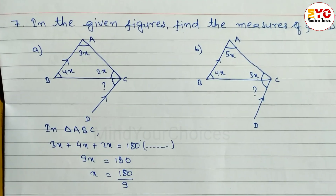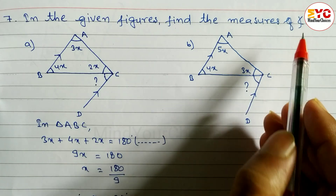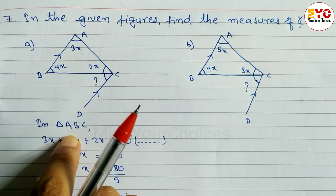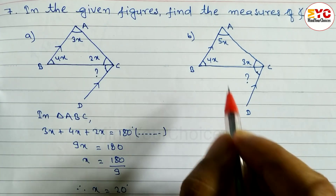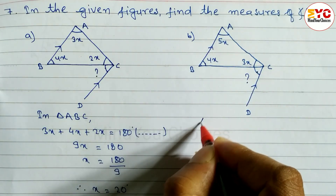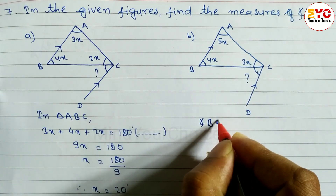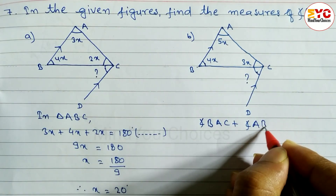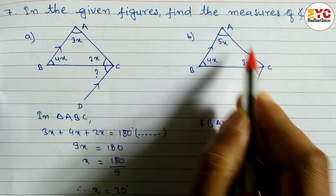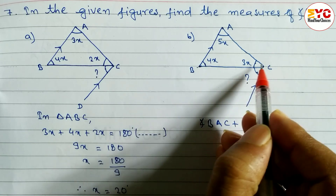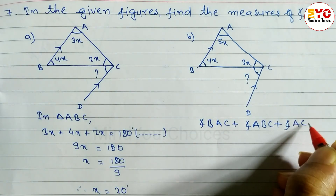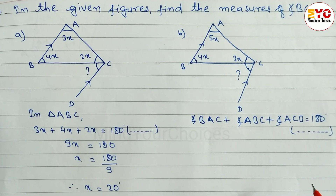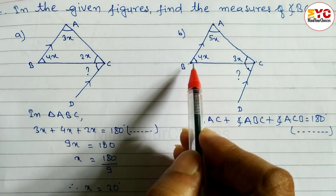Now look at question 7b. Here also we have to find angle BCD. We'll do this by another process: the sum of angles of the triangle is 180 degrees. So we write: angle BAC + angle ABC + angle ACB = 180 degrees. The reason is the sum of angles of a triangle.